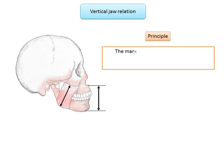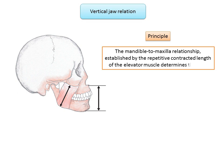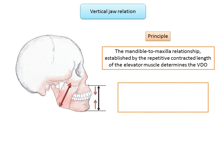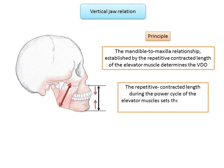The basic principle governing vertical jaw relation is that the mandible-to-maxilla relationship established by the repetitive contracted length of the elevator muscles determines the vertical dimension of occlusion. The mandible goes repetitiously to the position dictated by the contracted elevator muscles — predominantly the masseter. The upper and lower teeth erupt into the space until they meet at the jaw-to-jaw relationship. Thus, the repetitive contracted length during the power cycle of the elevator muscles sets the jaw-to-jaw relationship to which the teeth erupt.